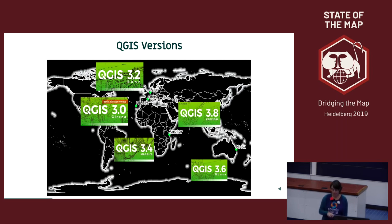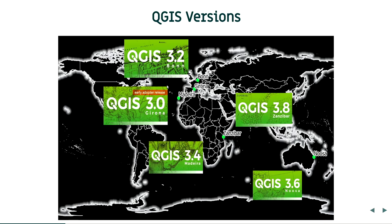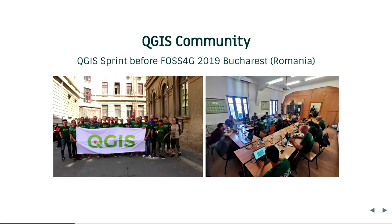Here you can see the last versions. At the moment the long-term release is version 3.4. There was a big break from version 2 to 3, for example Python 3 was implemented. You should move to the new world with QGIS 3.4. The actual version is Zanzibar, QGIS 3.8. All these names are connected to locations where developer sprints took place, showing how active the community is.